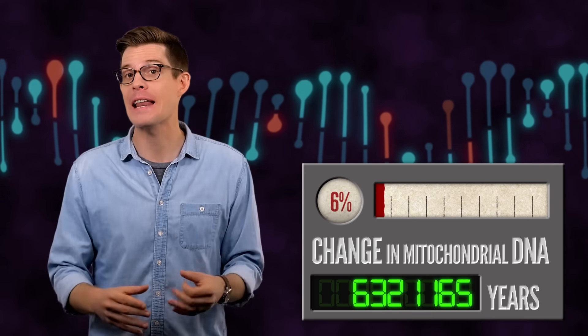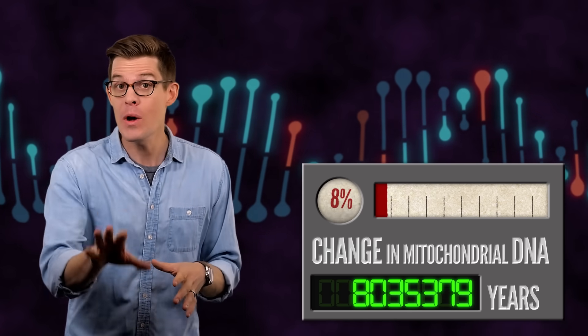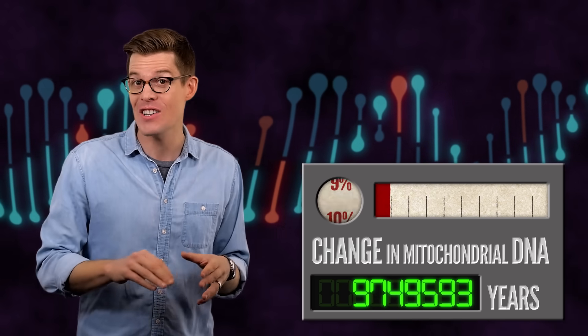many of these mutations slip through to the next generation. These genetic changes accumulate at a steady rate through time, so scientists can read them like a molecular clock and estimate how much time has passed, and which changes individuals share tell us how closely or distantly related they are.